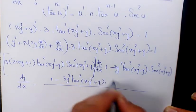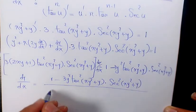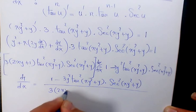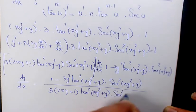divided by 3 times (2xy + 1) times tan² of (xy² + y) times secant² of (xy² + y). So that's going to be the final answer to this question.